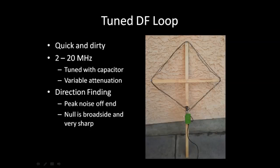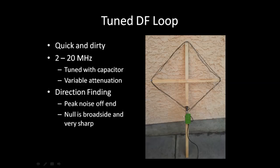This is my direction-finding tuned loop — quick and dirty, I mean it. It was really cobbled together. It was quite funny because when I was walking around the neighborhood direction-finding, a police sergeant pulled over and said it's not every day he sees someone wandering the neighborhood with a cross. We had a good chat and a good laugh about that. This loop can be used to tune from 2 to 20 MHz, which is pretty well the complete lower end of the high-frequency area. It's tuned with a capacitor and has variable attenuation. It's really good for direction-finding. You can peak the noise off the end of the loop, but what's really effective is the null — the broadside. The null is very sharp. You've got to be careful though: if you don't build the loop very carefully and symmetrically, then the null will be skewed a little bit.